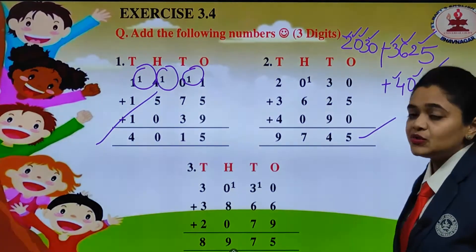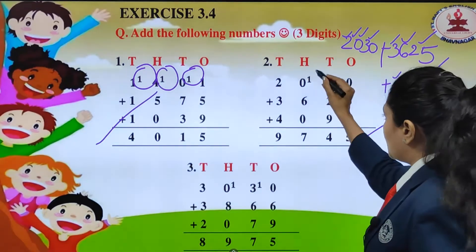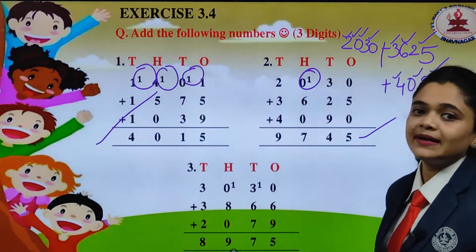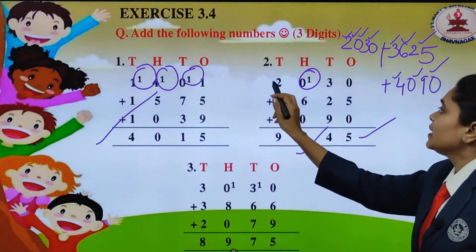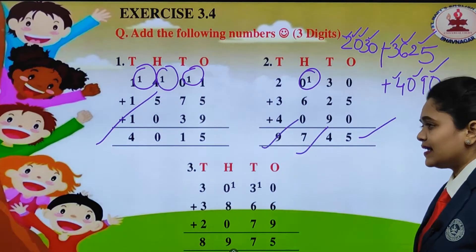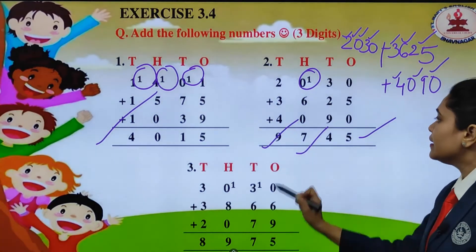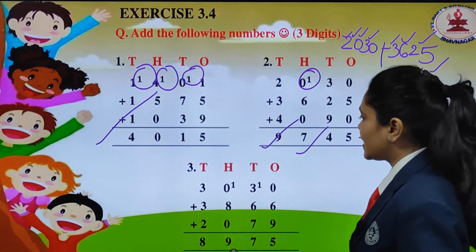3 plus 2, we will get 5. 5 plus 9, we will get 14. 1 carry, 4 down. Now 1 plus 6, we will get 7. 2 plus 3, we will get 5. 5 plus 4, we will get 9. So what is the answer? 9745 will be the answer.